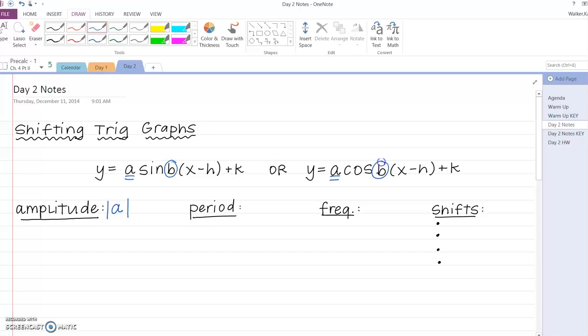Period is still whatever B is. So when I have a B, a number being multiplied inside sine or cosine, to find the period, you take two pi and divide it by B. Whereas frequency is just the reciprocal of that, B over two pi. The difference between the two: period just means the time it takes to complete a full wave, whereas frequency is how many waves I complete in two pi.